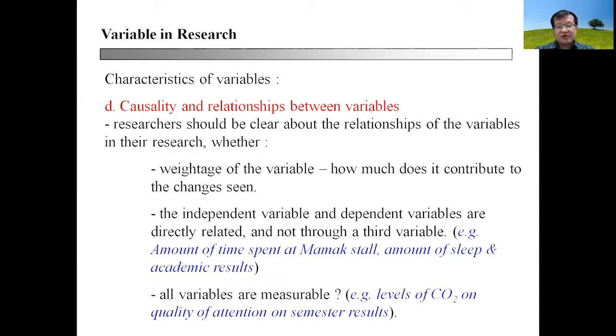The fourth characteristic will be causality and relationships between variables. Researchers should be clear about relationships or variables in research, whether the weightage of variables and how much it contributes to changes seen. You may investigate one factor and find it only contributes 5% or 1% of the changes seen. Then you have to determine whether that variable is important enough. You also need to know whether the independent and dependent variables are directly related or not, and not through a third variable.